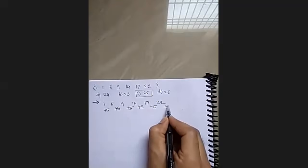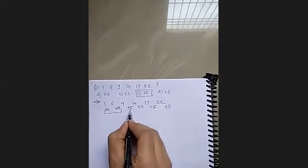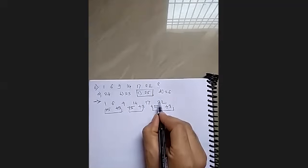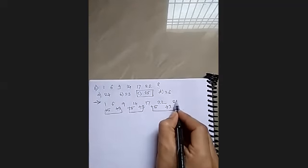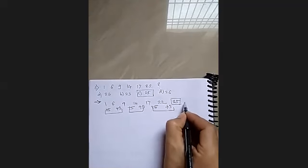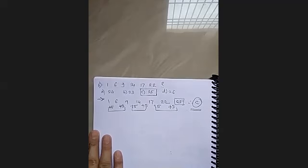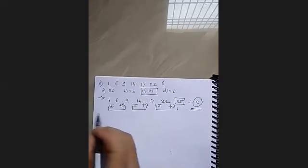So again now it should be plus 3. So one pair, second pair, so in third pair it should be plus 3. So 22 plus 3 should be 25. Therefore option C is the correct one. This is the way you can go through these kinds of mental ability questions.